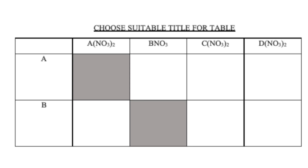You will do a table of results like the one outlined here to ensure that you capture the appearance of elements A and B, as well as the nitrates to which they are added and any changes that occur.